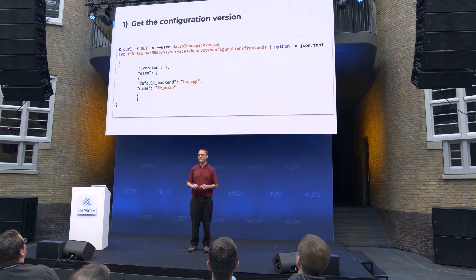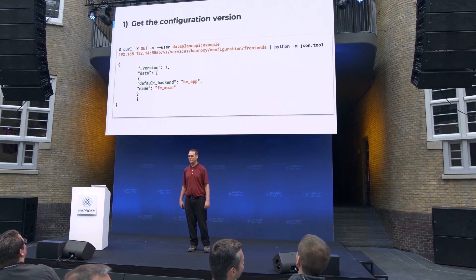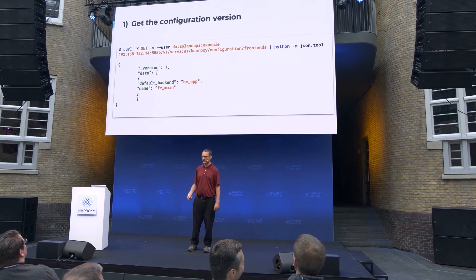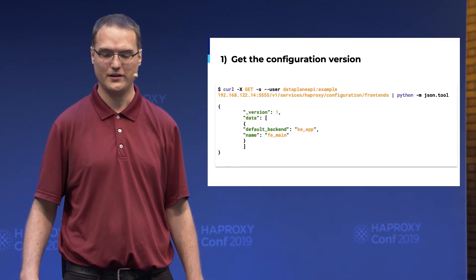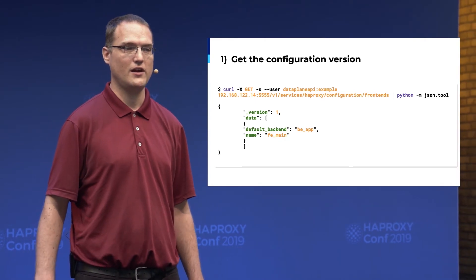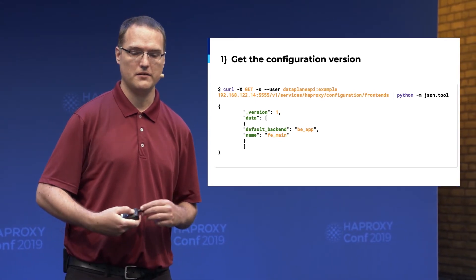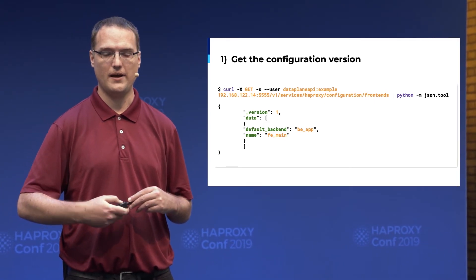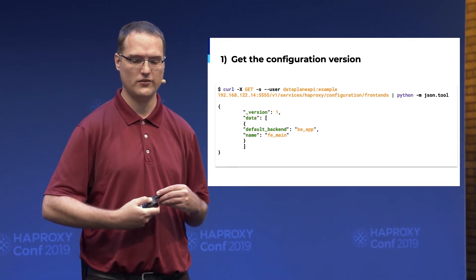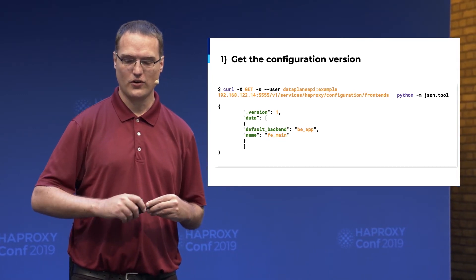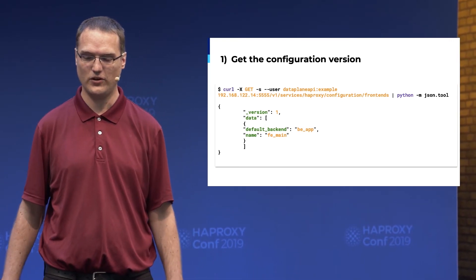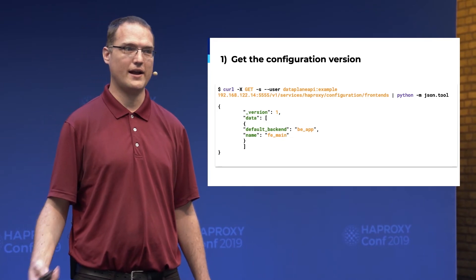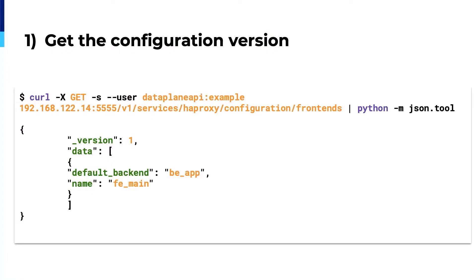The first thing you want to do is get the configuration version. This is also a way to get a list of frontends — you give it a username and password, point it to the URL, and querying configuration frontends will give you a list of all frontends and the basics of them, including ones written by hand as well as ones added by the API or a template system. The underscore version field tells you the version number you need to proceed. There is also a way to get backends, global settings, and whatever information you're seeking.